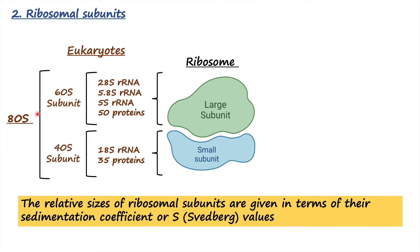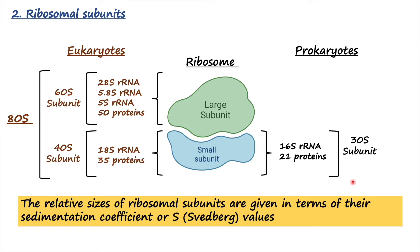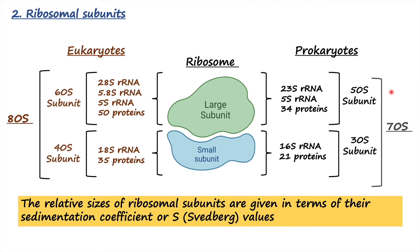You might wonder why the eukaryotic ribosome is called 80S and not 100S, which would be the simple addition of the two subunits. The reason is that Svedberg values are determined on the basis of both the shape and the molecular mass of the ribosome. Therefore the numeric value cannot simply be the addition of 60S and 40S. In prokaryotes, the small subunit is 30S and the large subunit is 50S, making a 70S ribosome.